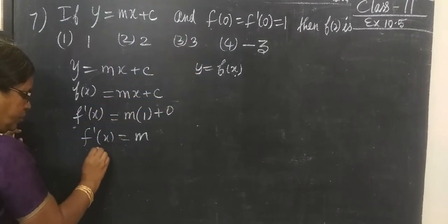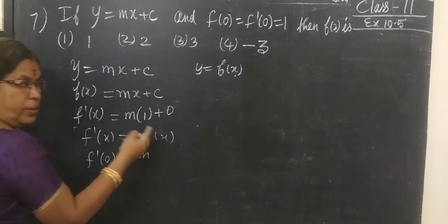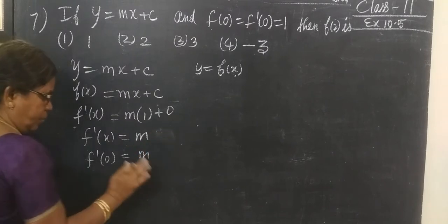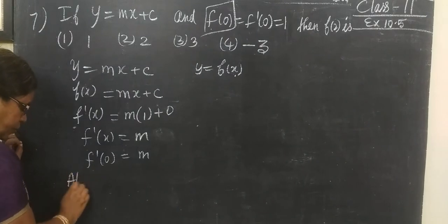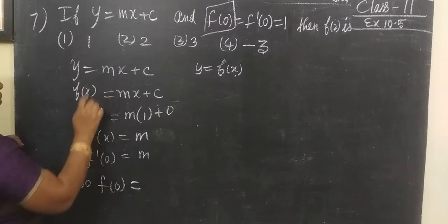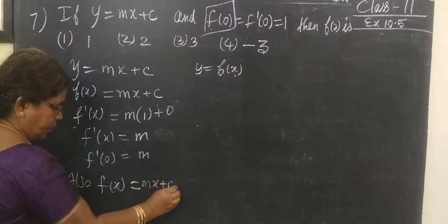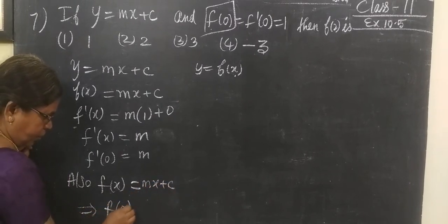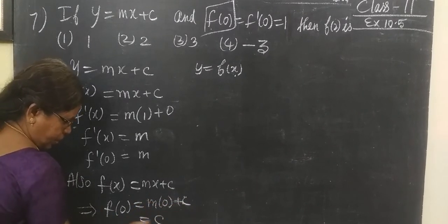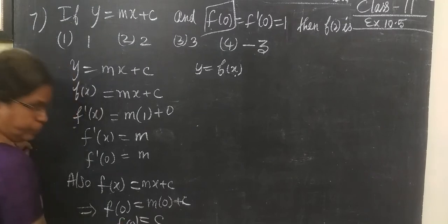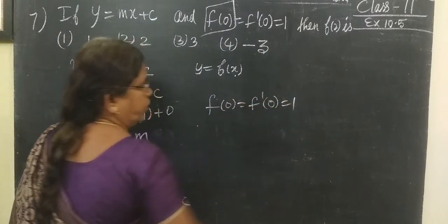Therefore, f'(0) is also equal to m. Now, f(x) equals mx plus c. If we substitute x equals 0 into f(x), f(0) equals c. It is given that f(0) equals 1, so c equals 1.